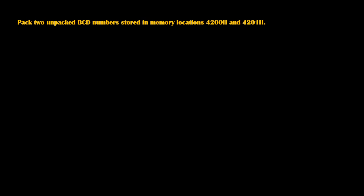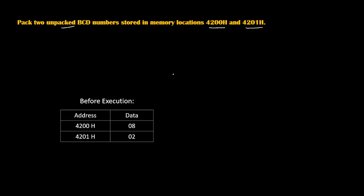Hello friends, today we are going to learn a program to pack two unpacked BCD digits stored in memory locations 4200H and 4201H. Before execution, let's say we have number 08H at 4200H and number 02H at 4201H. So we are having these two unpacked BCD numbers.